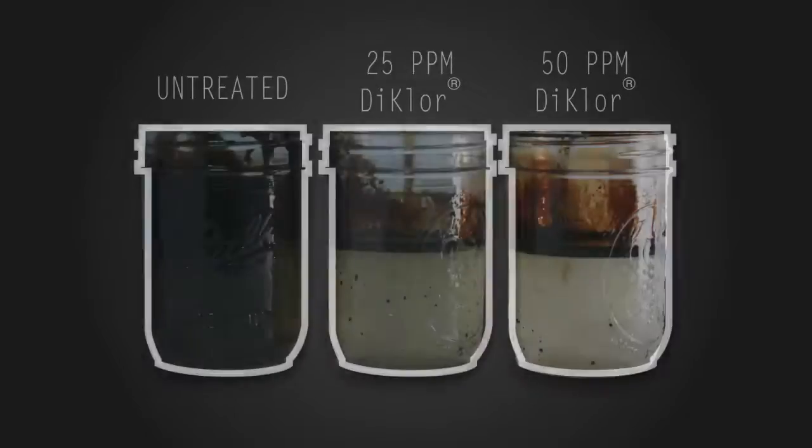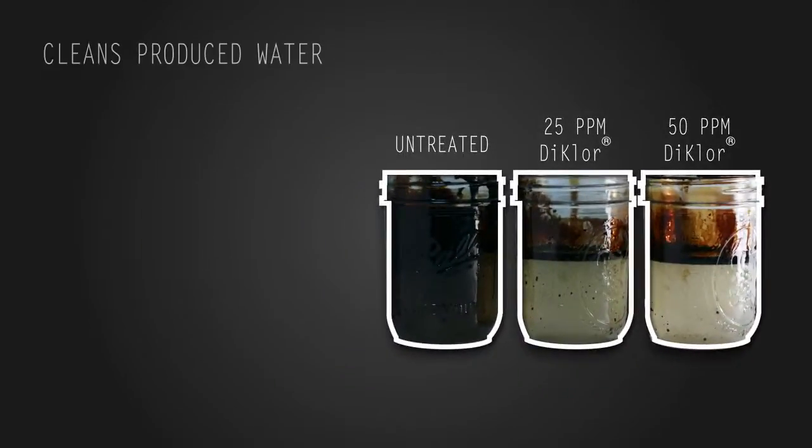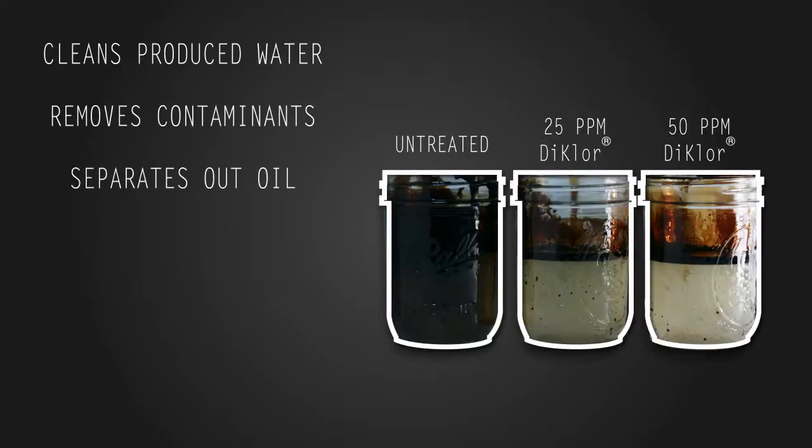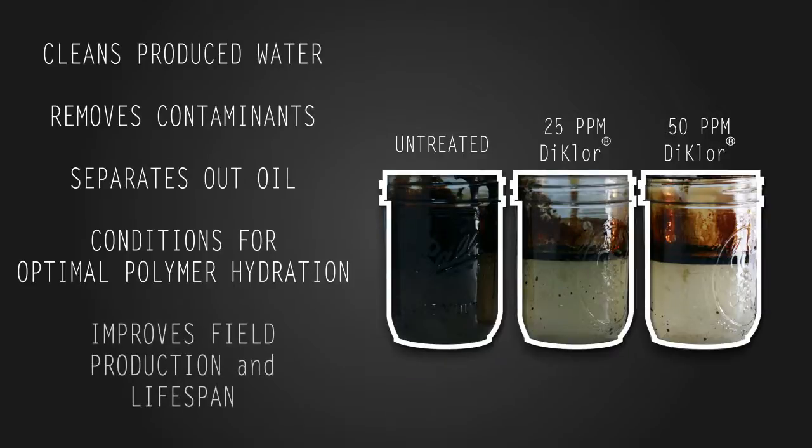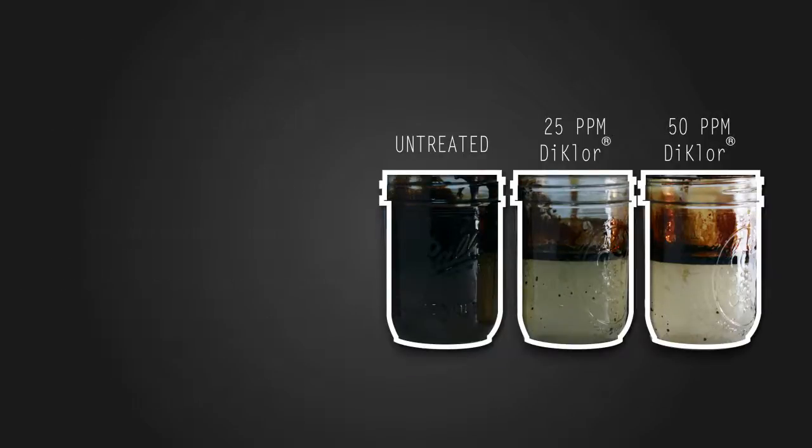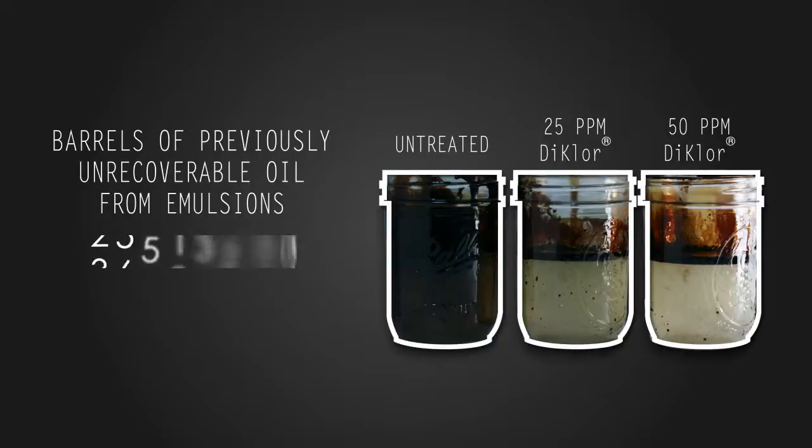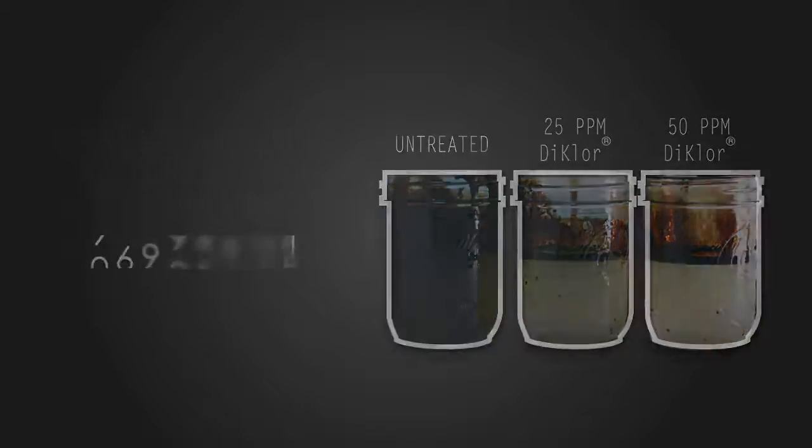In summary, the Dichlor process cleans produced water, removes contaminants, separates out oil, conditions it for optimal polymer hydration, and improves field production and lifespan. This means extracting tens of millions of barrels of previously unrecoverable oil from emulsions, reducing operational costs, and prolonging successful production for some of Canada's largest fields.